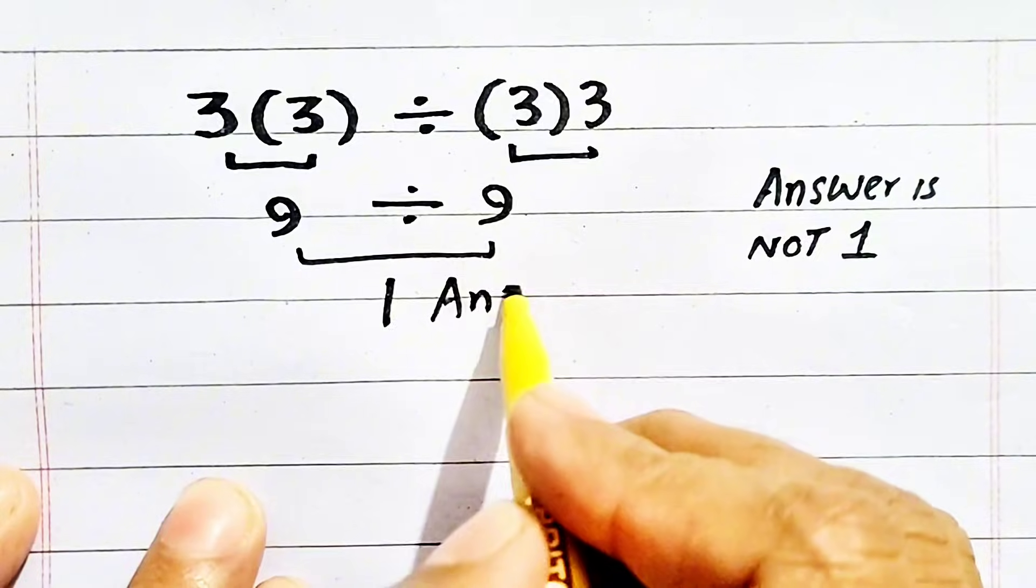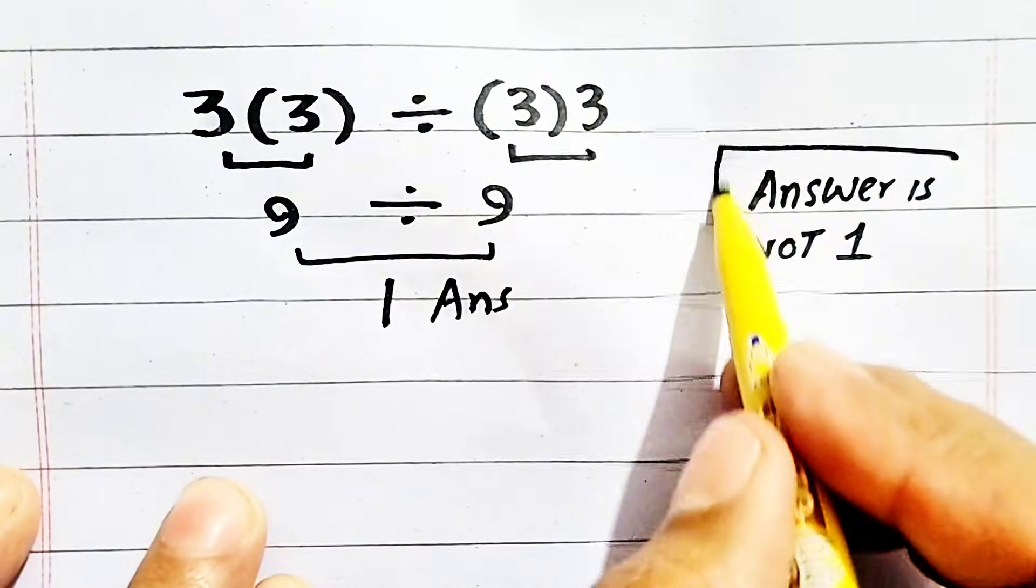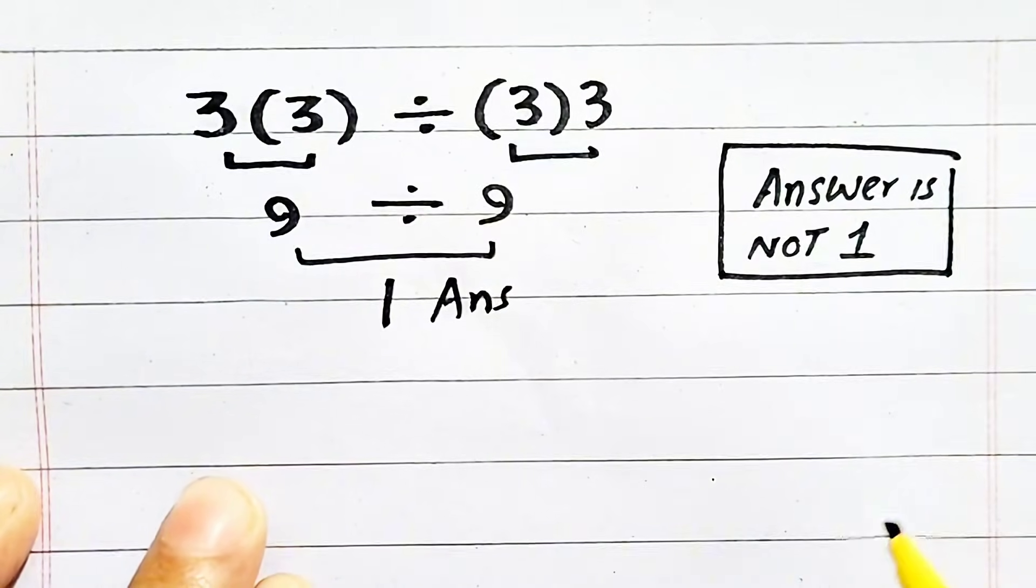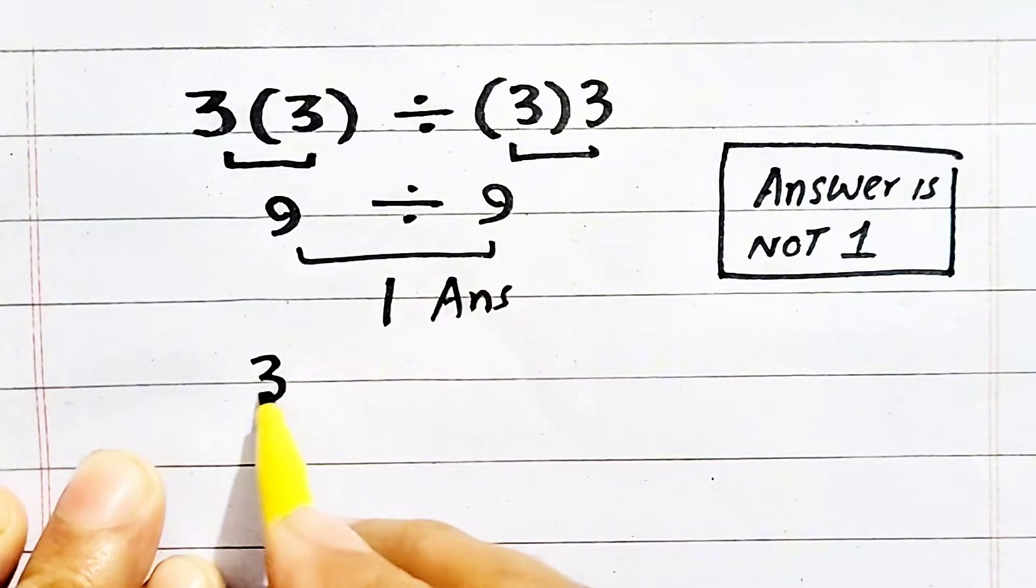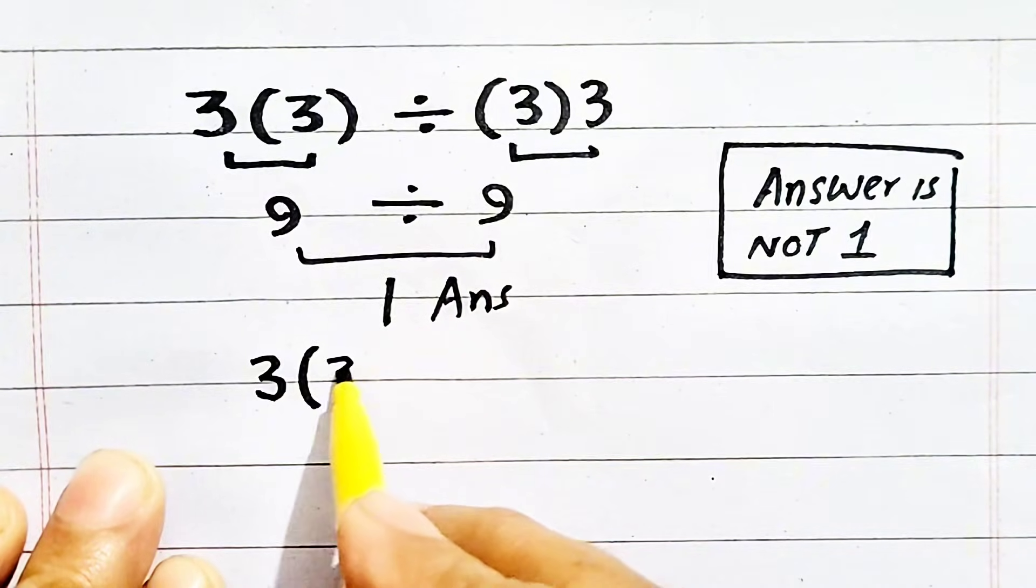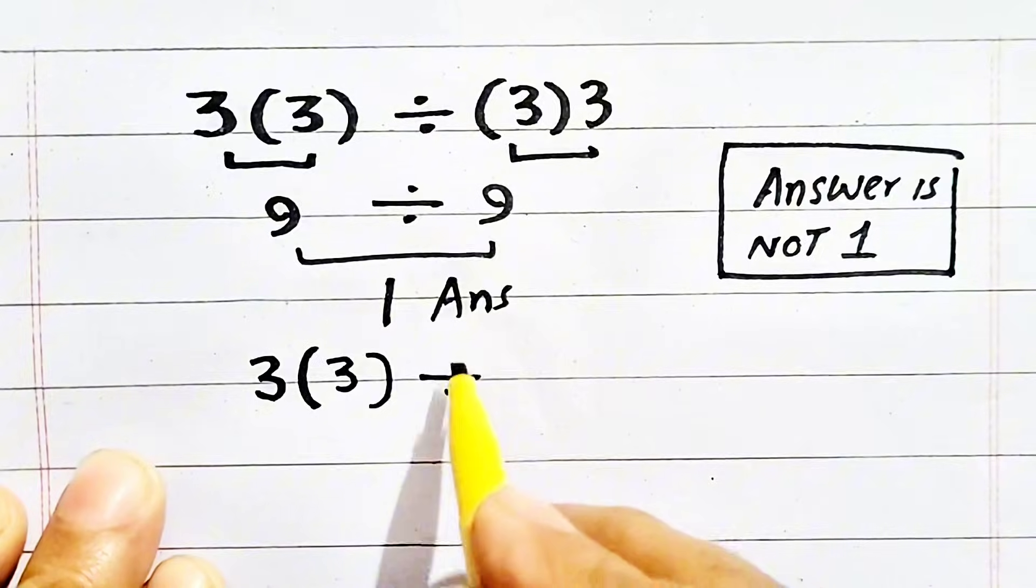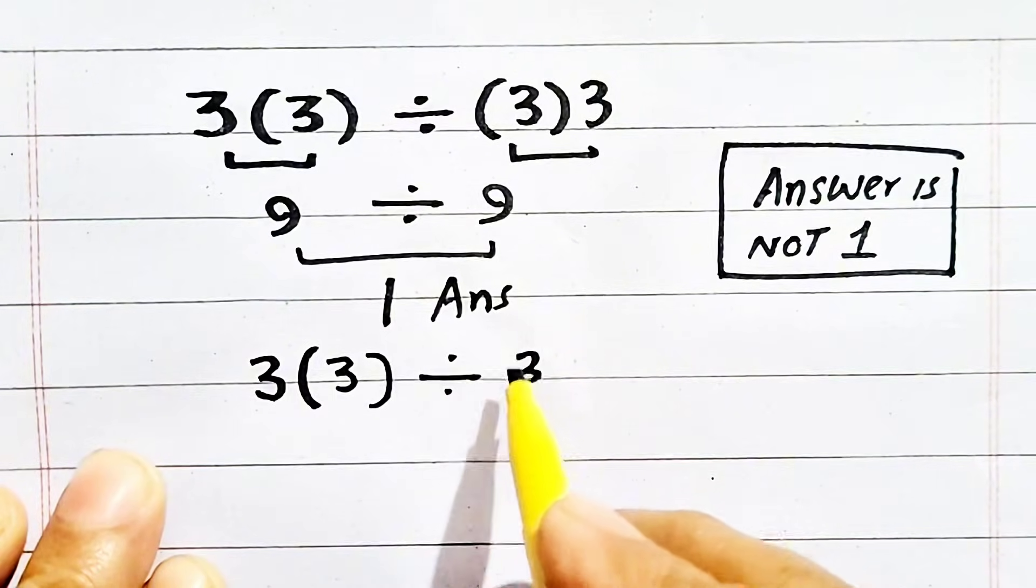1 is the answer, but I have mentioned that 1 should not be the answer, so there is a mistake. What is the mistake? We find out that mistake. According to the PEMDAS rule...